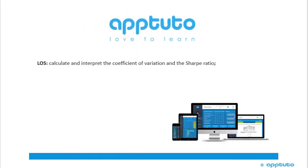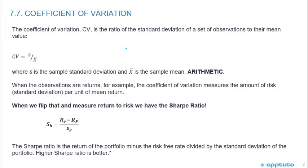This LOS is calculate and interpret the coefficient of variation and the Sharpe ratio. The coefficient of variation, or CV, is the ratio of the standard deviation of a set of observations to their mean value. The formula is CV equals S over X bar, where S is the standard deviation and X bar is the sample mean — specifically the arithmetic mean.